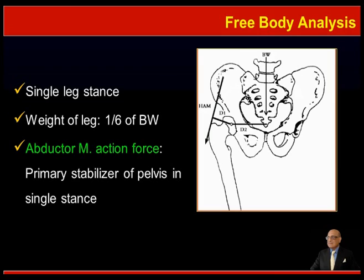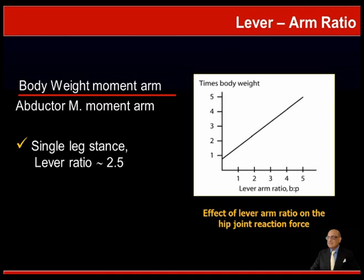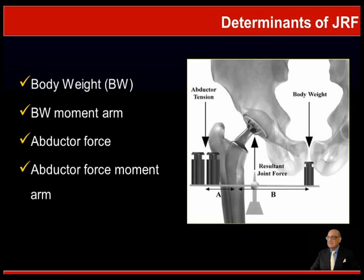In the free body analysis, we look at single leg stance. The weight of the leg is usually one-sixth of the body weight. The abductor muscle action force is the primary stabilizer of the pelvis in a single leg stance. We look at the lever arm, which is the distance between the point of action of force and the pivot. As Archimedes used to say, give me a place to stand and I shall move the earth with it. The lever arm ratio is the body weight moment arm divided by the abductor moment lever arm, and in a single leg stance this ratio is 2.5. The determinants of joint reaction force are the body weight, the body weight moment arm, the abductor force, and the abductor force moment arm.